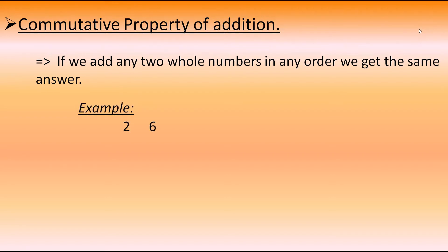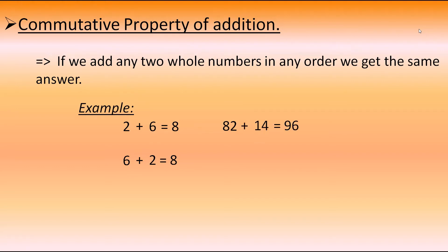I am taking two whole numbers, 2 and 6, and adding them — I get the answer as 8. If I interchange the places of 2 and 6 as 6 plus 2, I get the same answer as 8. Let's take one more example: 82 and 40. When I add them, I get 96. If I change the places as 14 plus 82, I still get 96. From both examples, we understand that if we add any two whole numbers in any order, we get the same answer — that is the commutative property of addition.